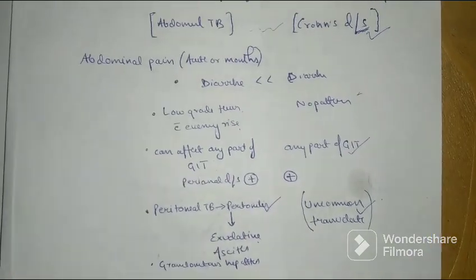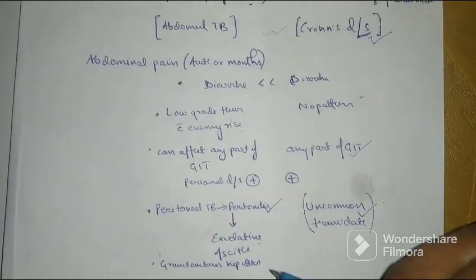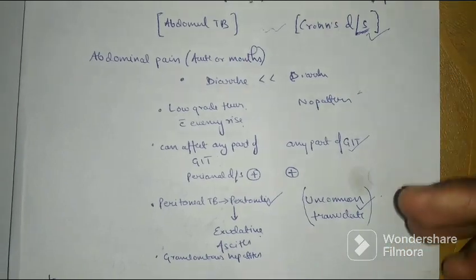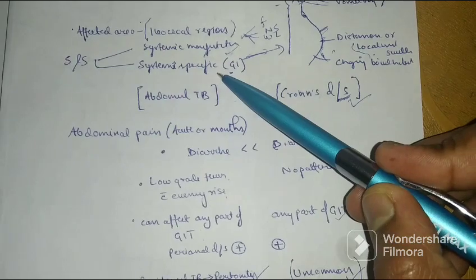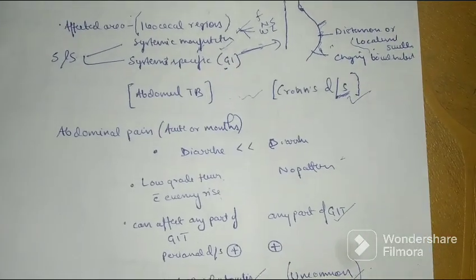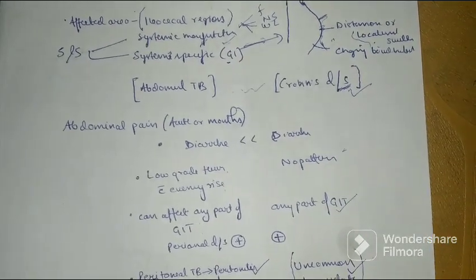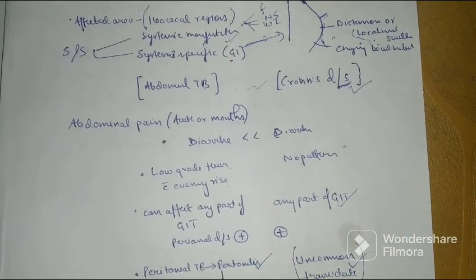Abdominal TB when involving the hepatobiliary region can lead to granulomatous hepatitis. We also need to understand along with systemic manifestation and system specific manifestation some of the manifestations that can occur from a particular region. So these are some of them.